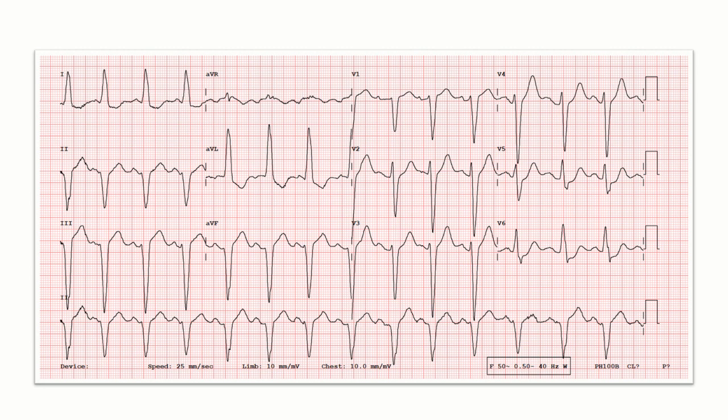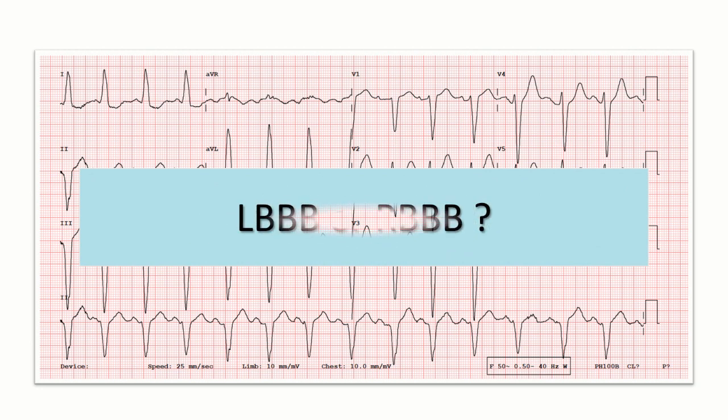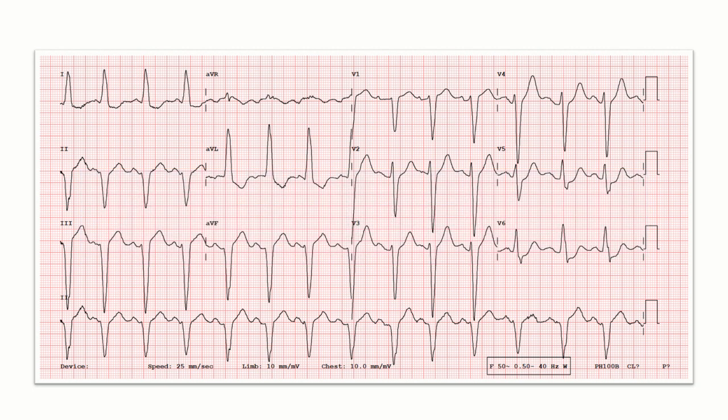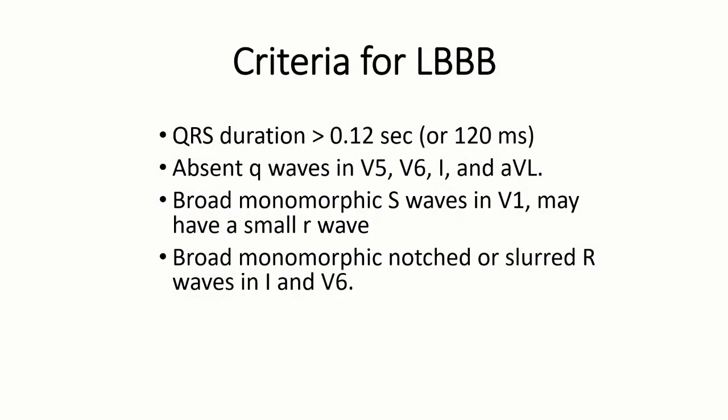This ECG is not normal. We'll try to find out whether this patient has left bundle branch block or right bundle branch block. First of all we'll understand the criteria for left bundle branch block, then we'll try to apply these criteria in our ECG. First, the duration of QRS complex should be more than 120 milliseconds.